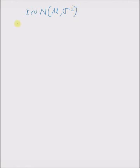Hello, welcome. In this short video, I will discuss the maximum likelihood estimates of mean and variance of a random process with Gaussian distribution. So given a random process x that has a Gaussian distribution with mean mu and variance sigma square, the problem is what are the most likely estimates of this mean and variance given n realizations of this random process. The goal is to find maximum likelihood estimates mu hat and sigma square hat.